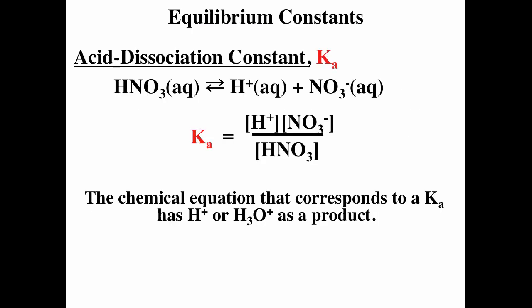The Ka is the acid dissociation constant. You have the acid as a reactant and the hydrogen ion as a product. So often when you're trying to recognize the type of equilibrium constant, you're looking for the hydrogen ion or hydroxide ion. And again for Ka, the hydrogen ion is written as a product.